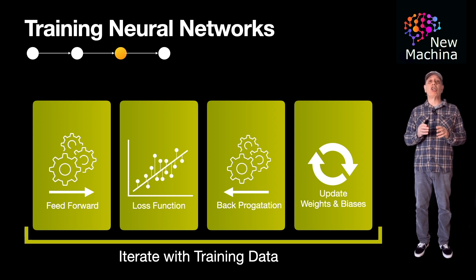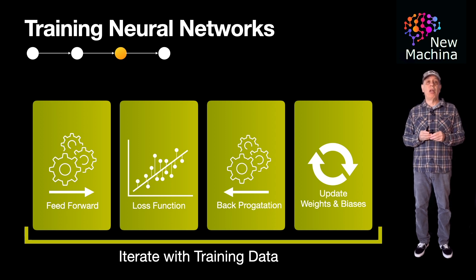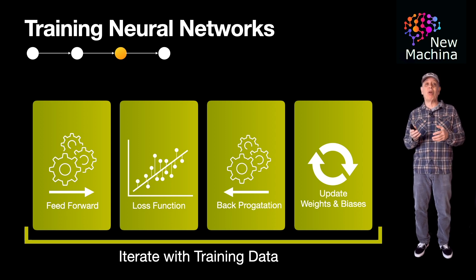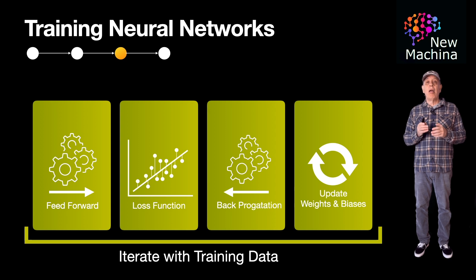The weights and biases are known as trainable parameters. The number of parameters in a neural network influences its capacity to learn complex patterns. More parameters can enable a network to capture more intricate relationships in the data, but they can also increase the risk of overfitting, where the model performs well on the training data, but poorly on unseen data.